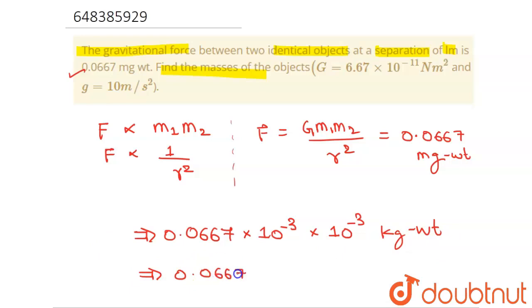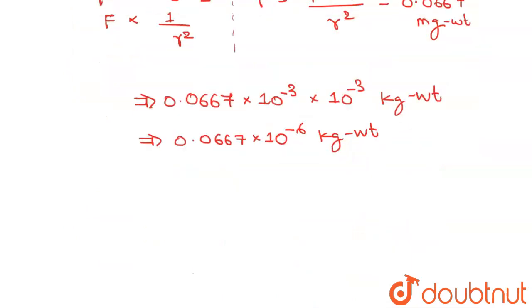That's 0.0667 times 10 to the power minus 6 kg weight. Simplifying this further: